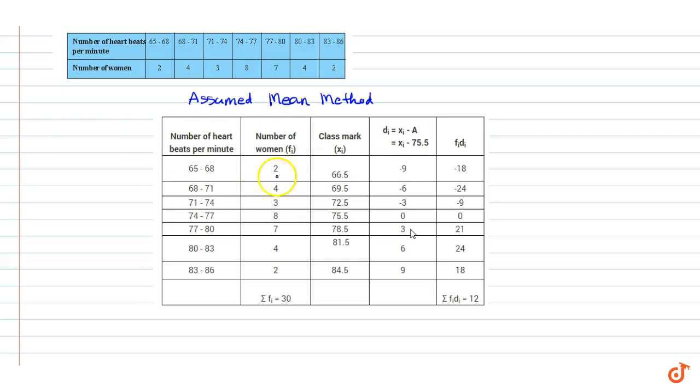These two columns are replicated from the given table and we have classmark xi. Xi represents the mean value of heartbeat per minute in the ith interval. For example, in the first interval the mean value is 66.5, in the second interval 68 to 71 the mean value is 69.5, and so on.